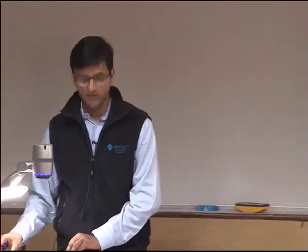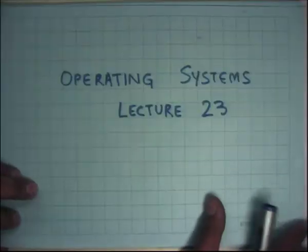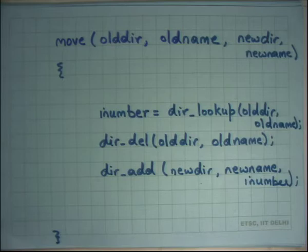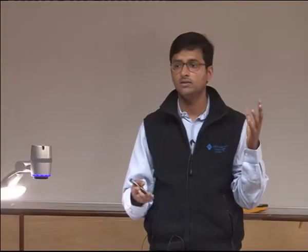Welcome to Operating Systems lecture 23. Last time we were talking about locking and we took this hypothetical example of a bank with many accounts and with functionality like transfer and sum. We said that coarse-grained locking can solve all the concurrency problems, but coarse-grained locking is not good because it serializes everything.